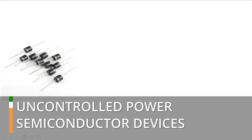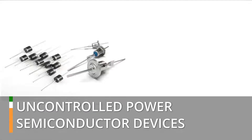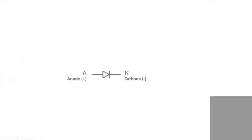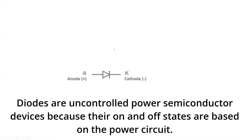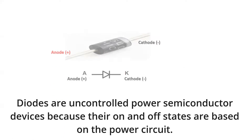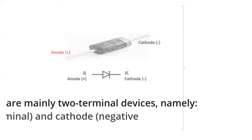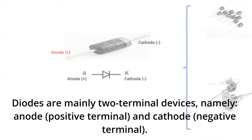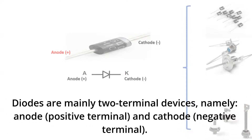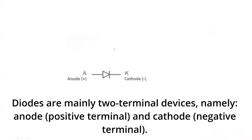Uncontrolled power semiconductor devices. Diodes are uncontrolled power semiconductor devices because their on and off states are based on the power circuit. Diodes are mainly two-terminal devices, namely anode (positive terminal) and cathode (negative terminal).